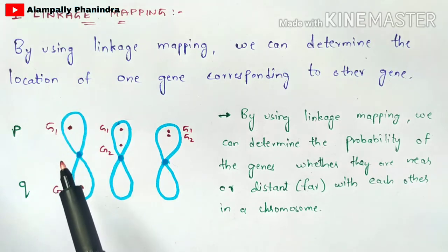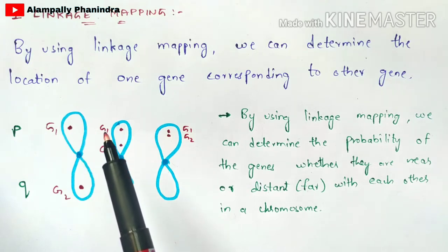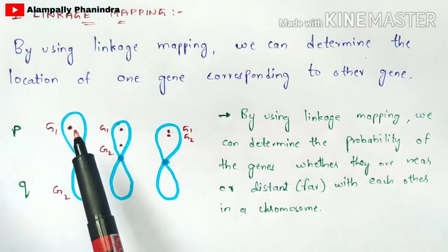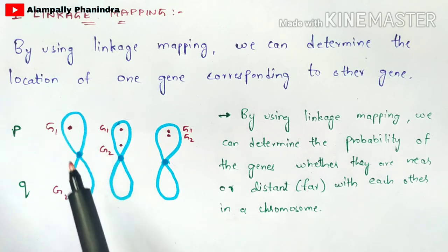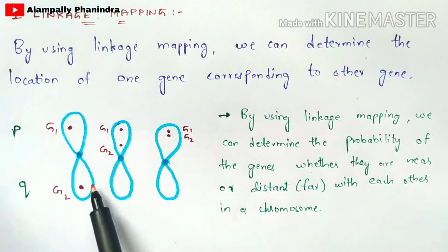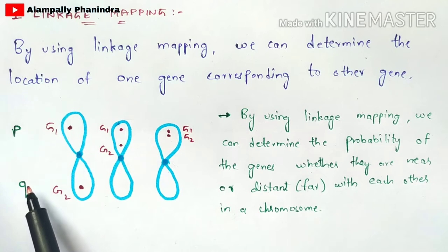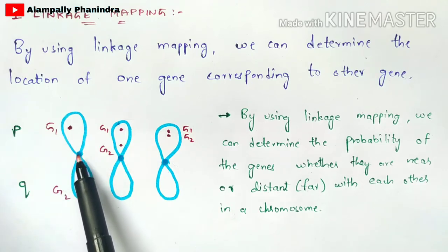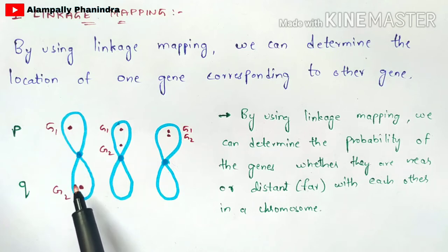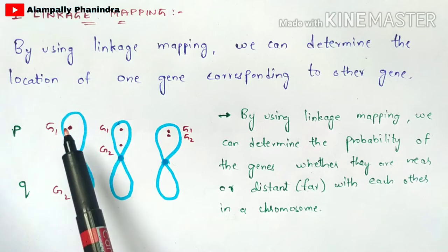Before knowing about this procedure, you have to know about the structure of the chromosome. The upper arm is short and is represented as capital P, and the lower arm which is long is represented as small Q. This region here is called the centromere region, and this is your telomere region.